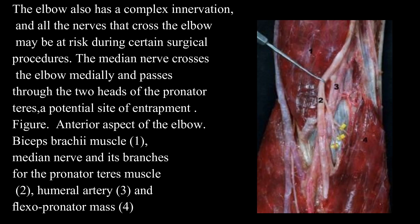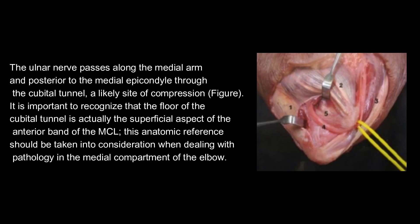The elbow also has a complex innervation, and all the nerves that cross the elbow may be at risk during certain surgical procedures. The median nerve crosses the elbow medially and passes through the two heads of the pronator teres — a potential site of entrapment. The ulnar nerve passes along the medial arm and posterior to the medial epicondyle through the cubital tunnel — a likely site of compression. It is important to recognize that the floor of the cubital tunnel is actually the superficial aspect of the anterior band of the MCL. This anatomic reference should be taken into consideration when dealing with pathology in the medial compartment of the elbow.